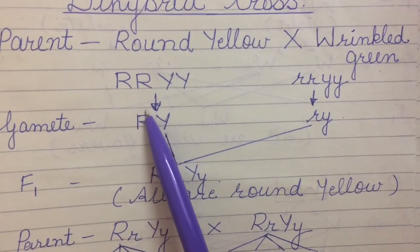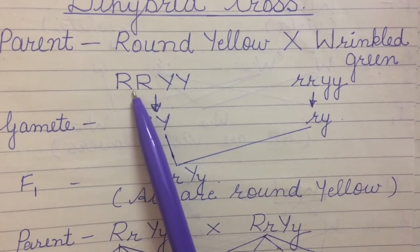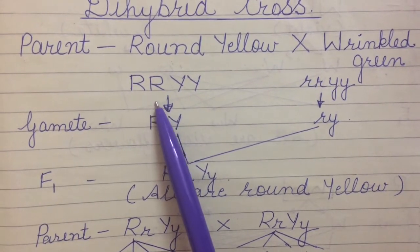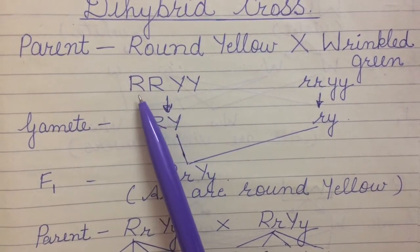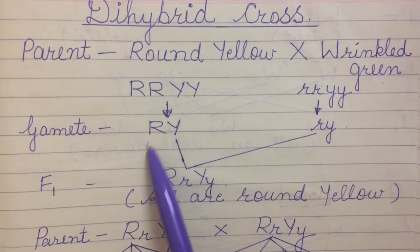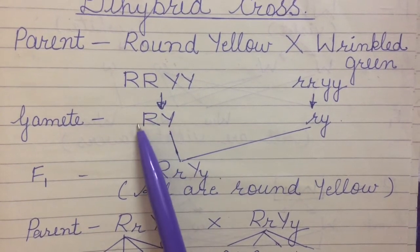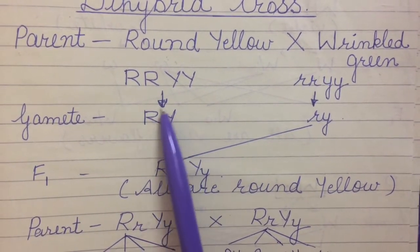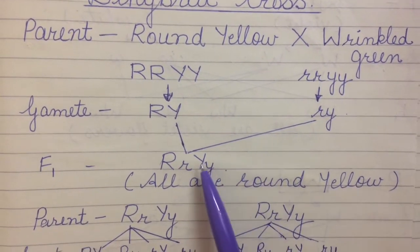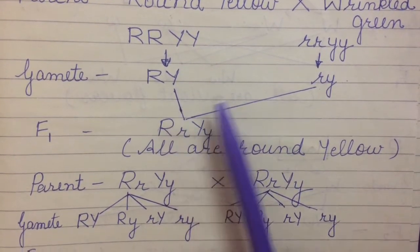At the time of gamete formation, jab in ki gametes banenge to dono alleles alag ho jaenge. Humne padha hai ki meiosis mein chromosome number half ho jaata hai — characters half ho jaate hain. In this also, at the time of gamete formation, from these two R's one R will come, and from this Y one Y will come. So in the gamete only capital R and capital Y will come; and here small r and small y.